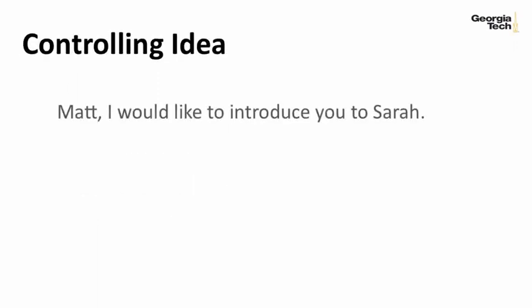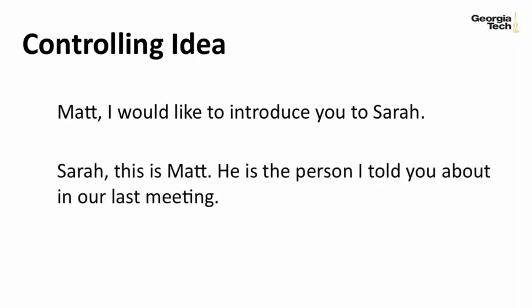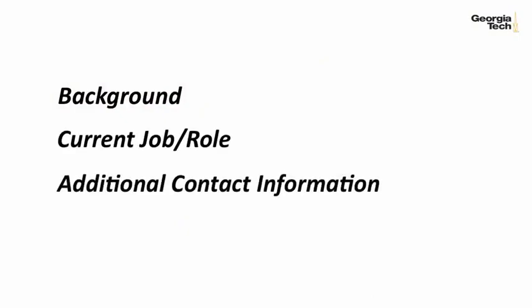Your controlling idea can look something like this: 'Matt, I would like to introduce you to Sarah.' Or: 'Sarah, this is Matt. He is the person I told you about in our last meeting.' In the development part, you will give more information about the person you are introducing. This could include information about their background, their current job or role, and additional contact information. However, if you just want the two parties to continue the conversation on their own, just providing them with the contact information is enough.